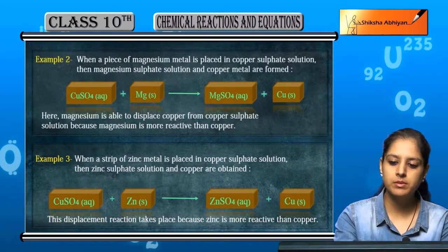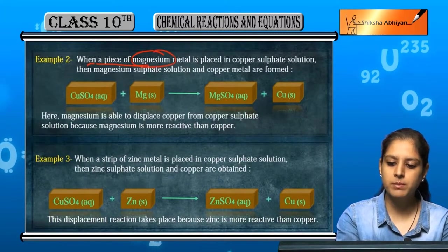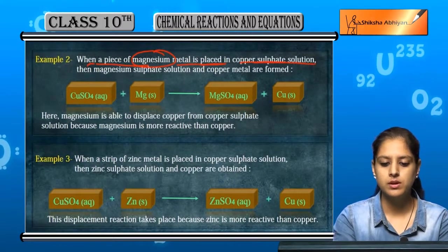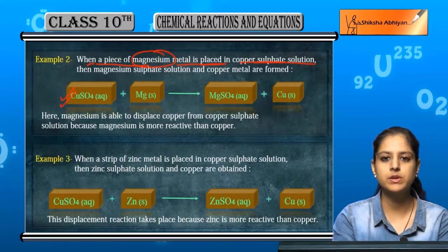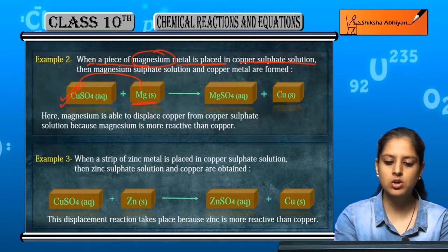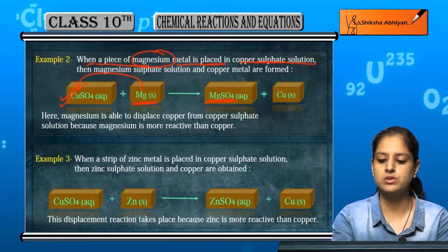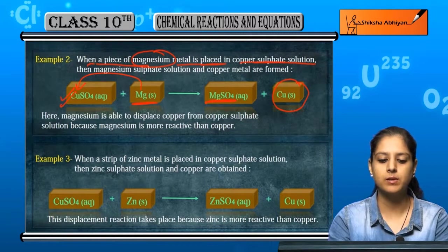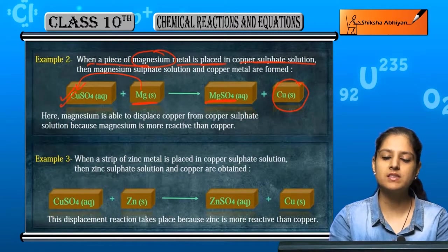Another example: when a piece of magnesium metal is placed in copper sulphate solution, CuSO4, magnesium will displace the copper. CuSO4 becomes MgSO4 and copper is formed separately because copper is less reactive.